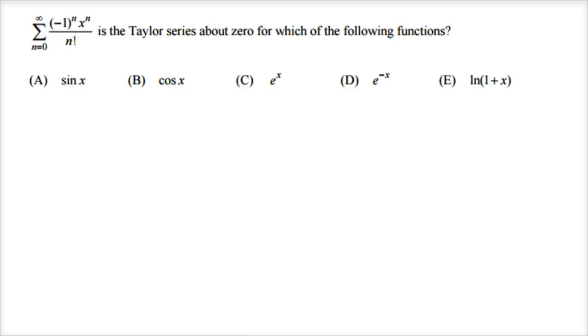If we expand it out, when n is equal to zero, it's negative one to the zero power, which is one, times x to the zero, which is one, over zero factorial, which is one — so the first term is just one.